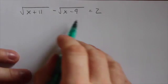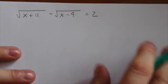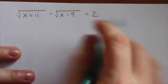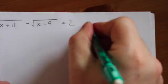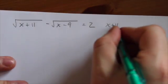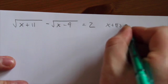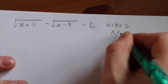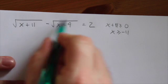When you get two radicals in here, first thing we want to do is probably identify the restrictions. Because of this term right here, we know that x plus 11 has to be greater than or equal to 0, which means x will have to be greater than or equal to negative 11.